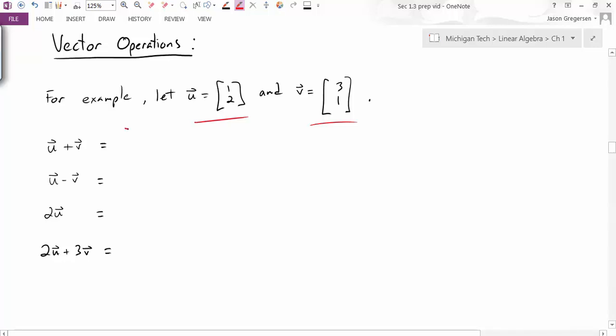So u plus v, that's this vector 1, 2, plus the vector 3, 1. And to add those vectors, the way I'm going to define addition in Rn is just to add these component-wise, add their components. So I add their first components together, and I add their second components together. And the result here will be the vector 4, 3.